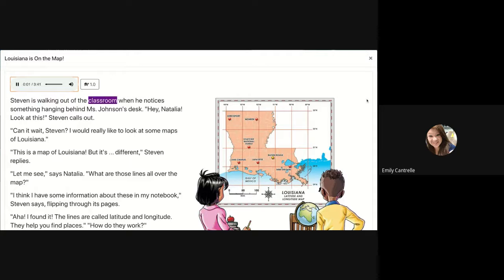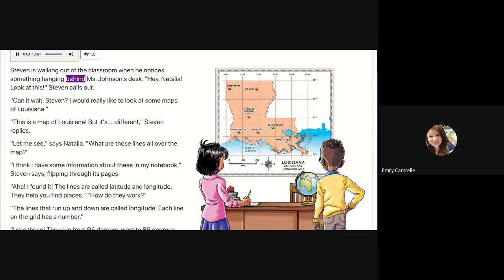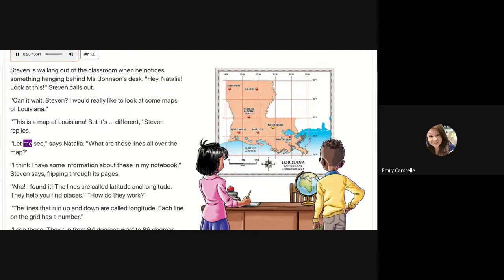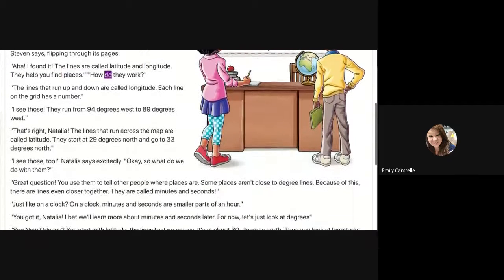Stephen is walking out of the classroom when he notices something hanging behind Miss Johnson's desk. 'Hey Natalia, look at this!' Stephen calls out. 'Can it wait, Stephen? I would really like to look at some maps of Louisiana.' 'This is a map of Louisiana, but it's different,' Stephen replies. 'Let me see,' says Natalia. 'What are those lines all over the map?' 'I think I have some information about these in my notebook,' Stephen says, flipping through its pages. 'Aha, I found it! The lines are called latitude and longitude — they help you find places.'